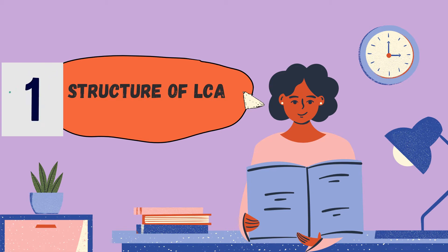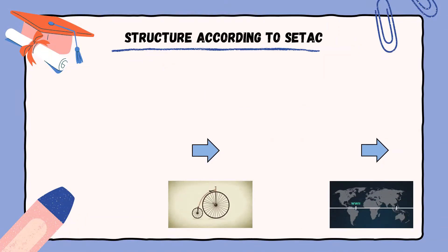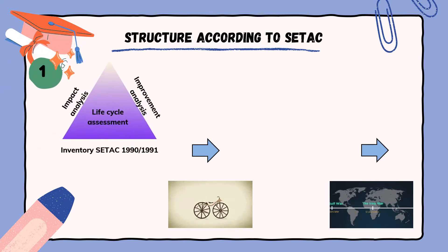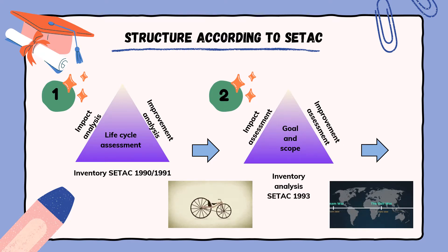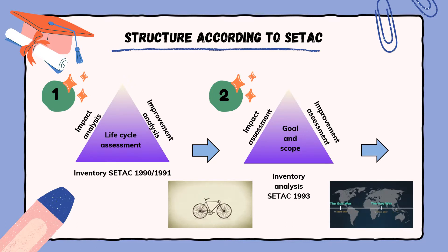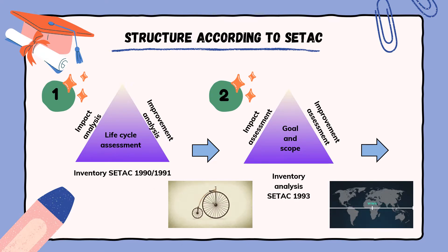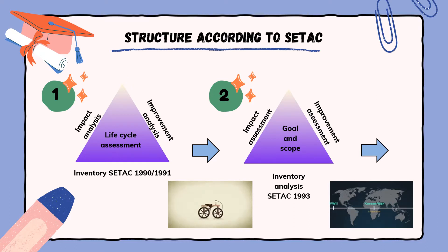First, we will discuss the structure of LCA. Structure according to SETAC: the first attempt to structure LCA was by the SETAC triangle of 1990-1991. Inventory analysis per SETAC 1993 and ISO 1997-2006: inventory in the context of LCA, LCI means material and energy analysis of the examined system from cradle to grave. The resulting inventory table contains a list of all material and energy inputs and outputs. These numbers of LCI need an ecological analysis or weighting. Inputs and outputs are sorted according to their impact on the environment — for instance, all releases into the air causing acid rain are aggregated. This procedure was formerly called impact analysis by SETAC and later impact assessment.